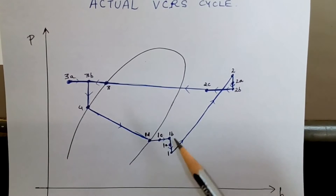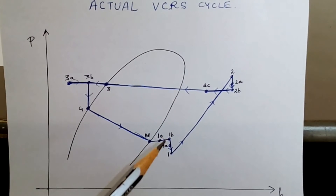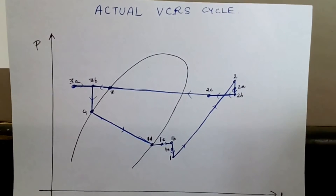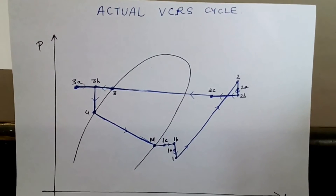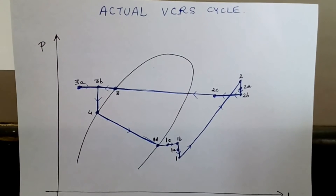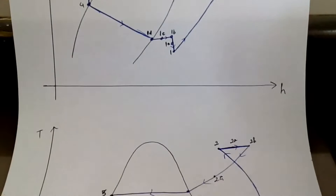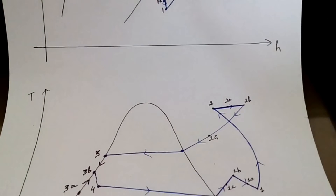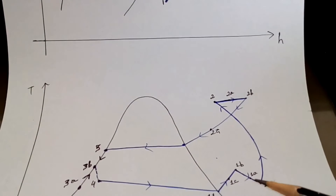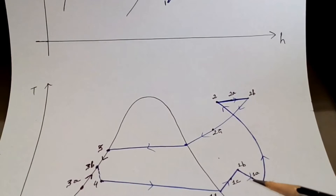From 1b to 1a there is a pressure drop in the suction line. Because pressure drops, temperature also drops.